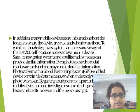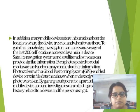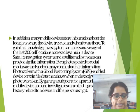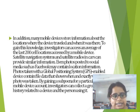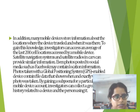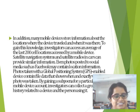Satellite navigation systems and satellite radio in cars can provide similar location information. Even photos posted to social media such as Facebook may contain location information. Photos taken with GPS enable device content file data showing when and exactly where photos were taken. By gaining access to a particular mobile device account, investigators can collect a great history related to the device and person using it.